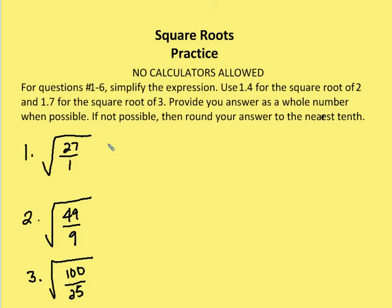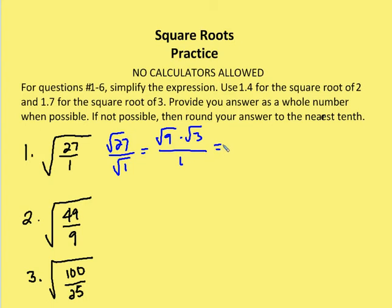So the first problem: we have the square root of 27 over 1. I can rewrite that as the square root of 27 over the square root of 1 using the quotient property. Then I can use the product property to say that the square root of 27 is the same as the square root of 9 times the square root of 3. I know the square root of 1 is just 1, and the square root of 9 is 3. So the answer is simply 3 times the square root of 3.